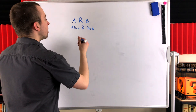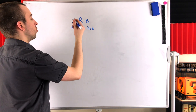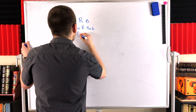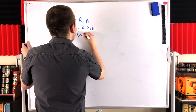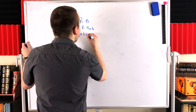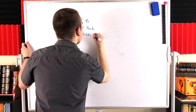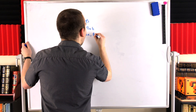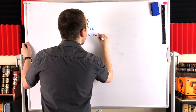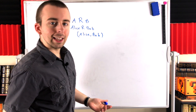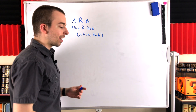And if we wanted to drop the R for convenience, we could represent this relation with an ordered pair: (Alice, Bob). Alice relates to Bob under this particular relation of handshaking.